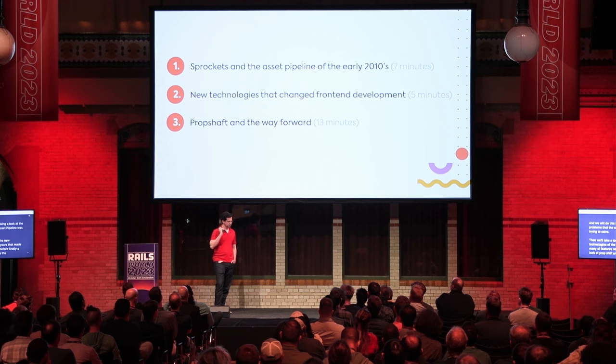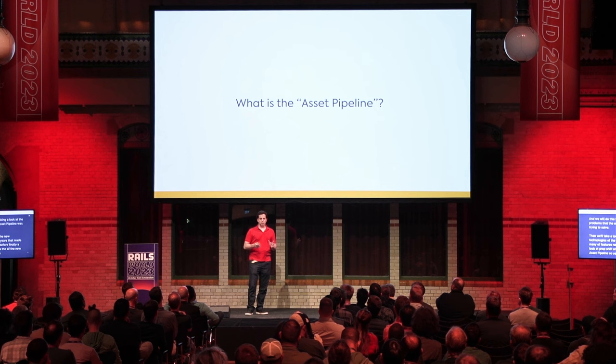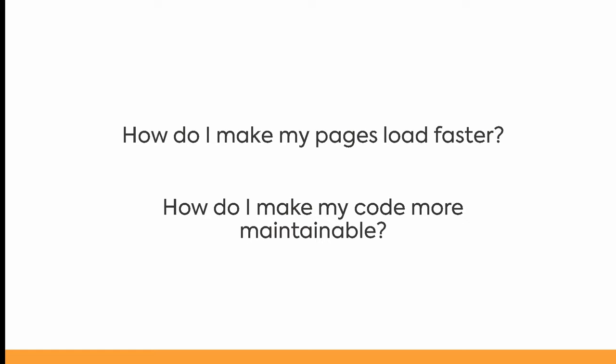Section one. When I say asset pipeline, what I mean is a collection of features and techniques that together answer two questions about front-end development: how do I make my pages load faster, and how do I make my code more maintainable?